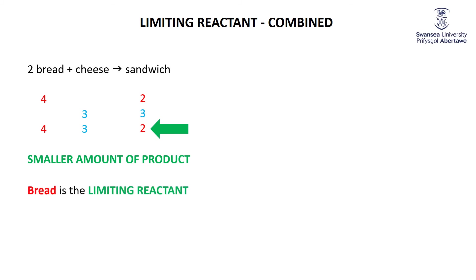Bread limits how many sandwiches I can make — it is the limiting reactant. Because I have enough cheese for three sandwiches but can only make two, the cheese is in excess. I have one sandwich worth of cheese left over.